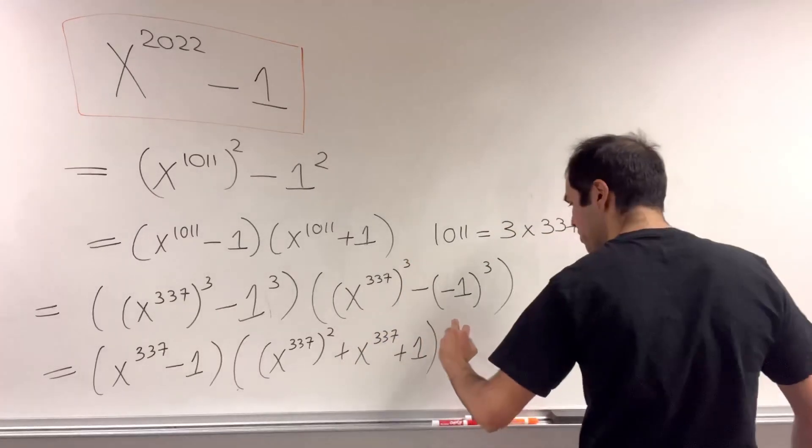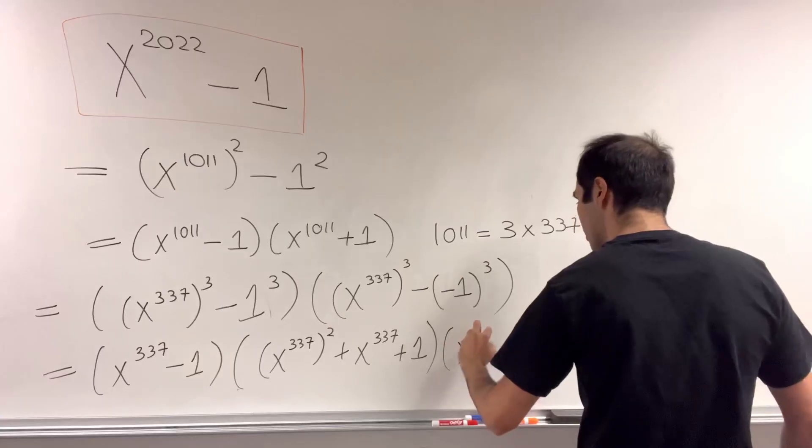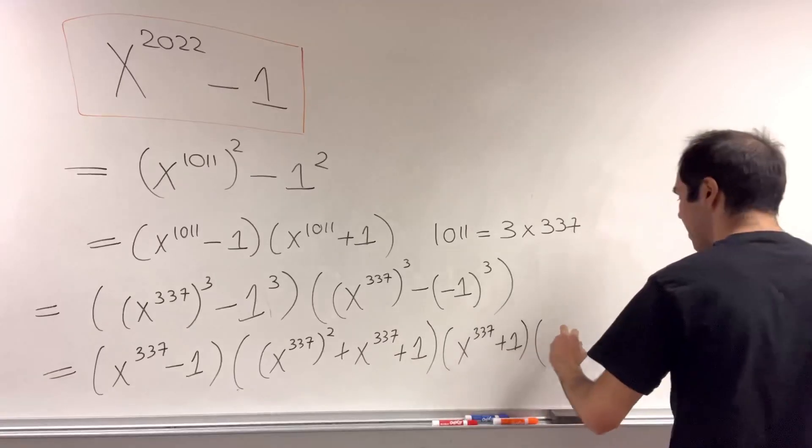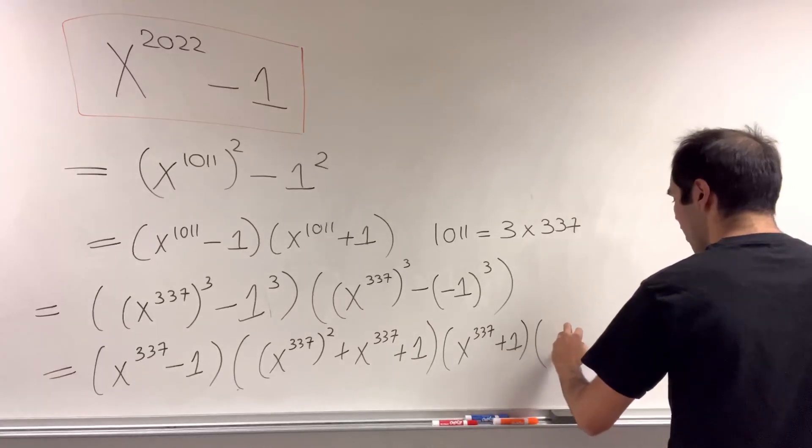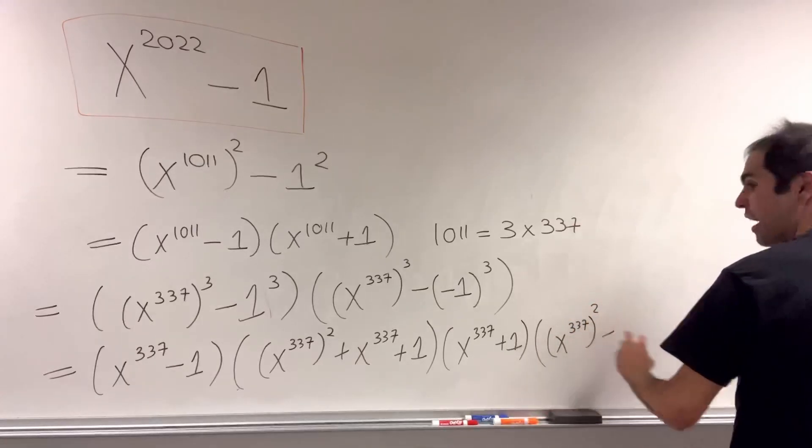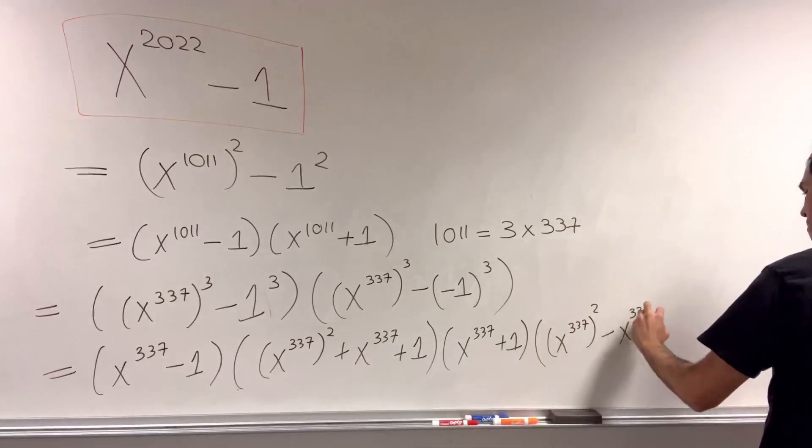And same spiel with the other one, x to the 337 plus 1 times, so you just replace x with minus x. So x to the 337 squared minus x to the 337 plus 1.